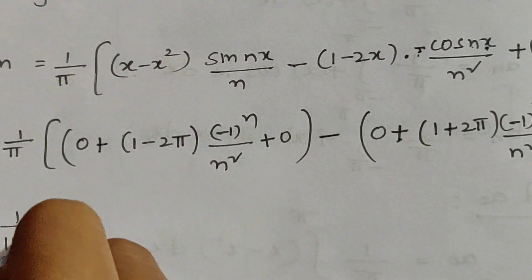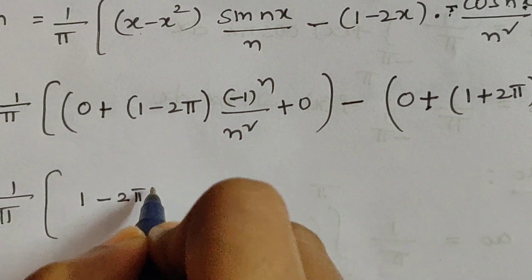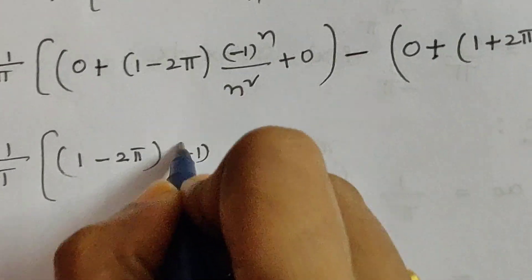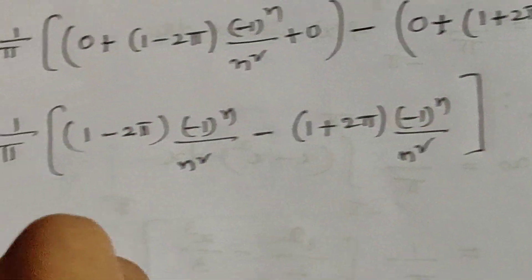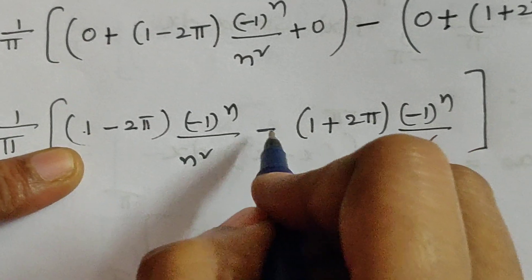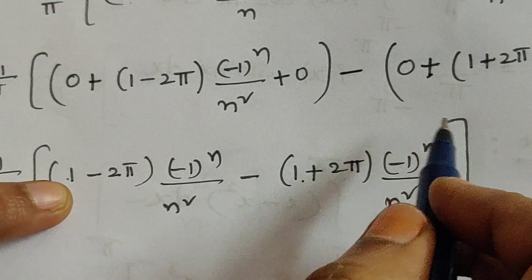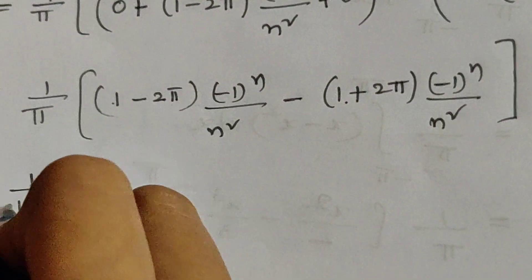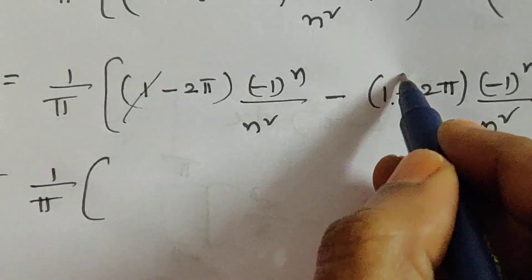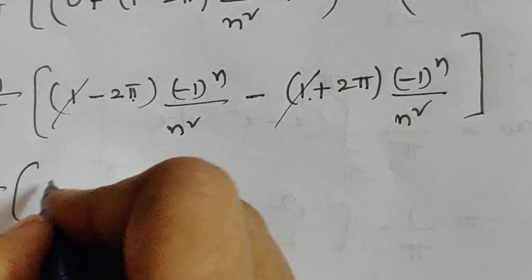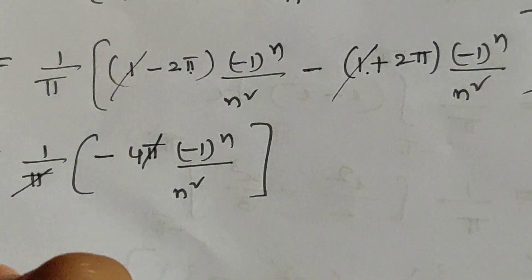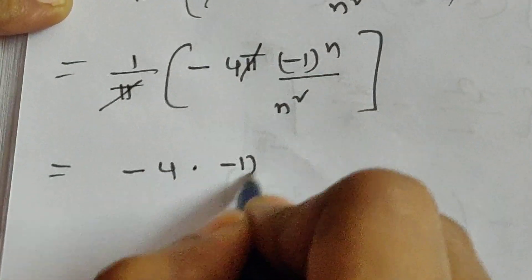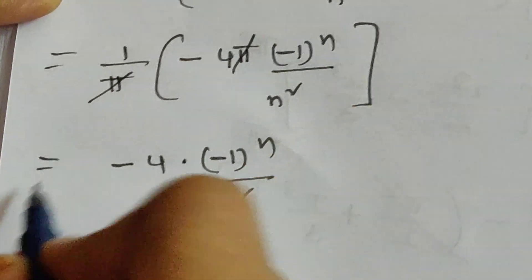So it equals 1 by pi times minus 4 pi times minus 1 whole power n by n square. Pi cancels, giving a n equal to minus 4 times minus 1 whole power n by n square.